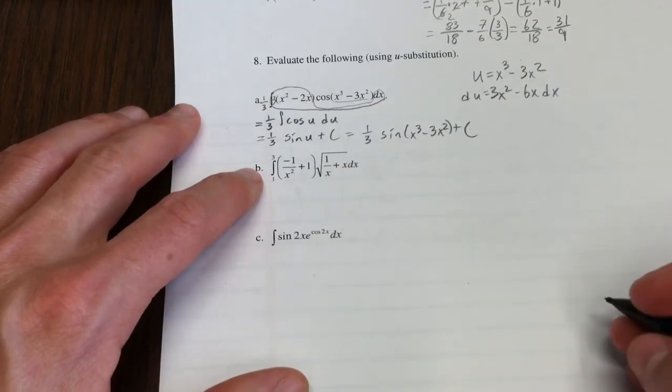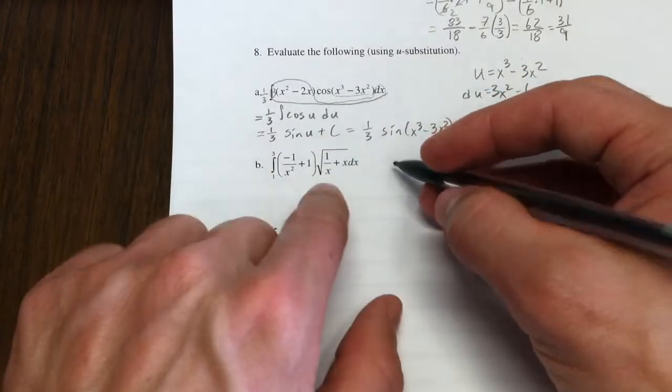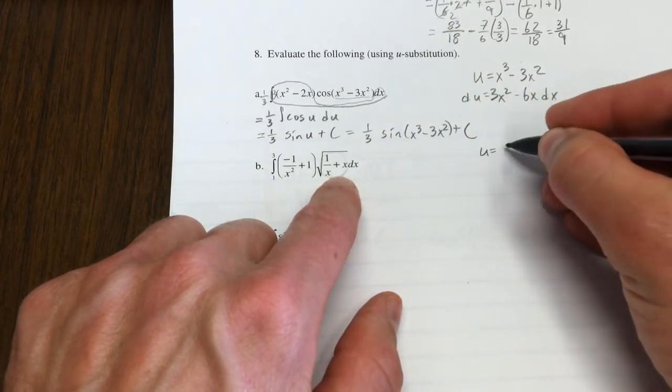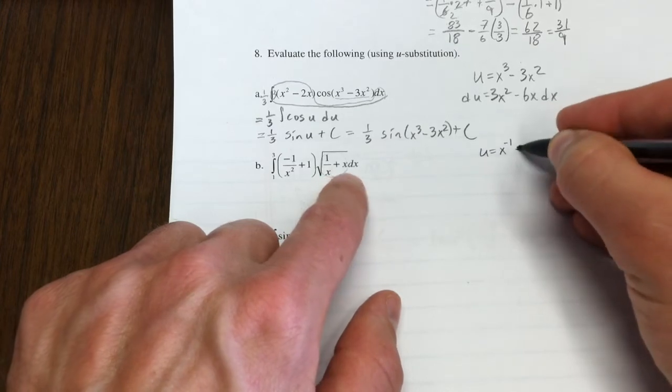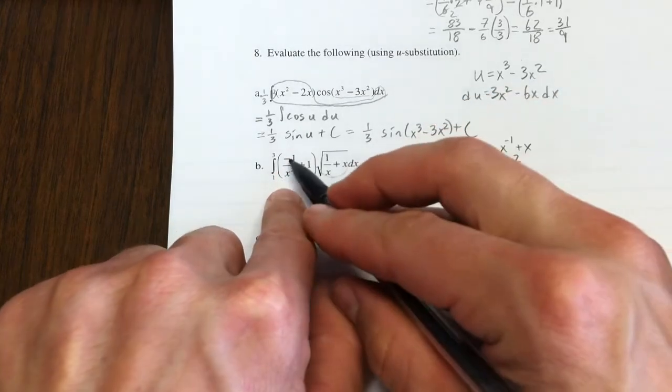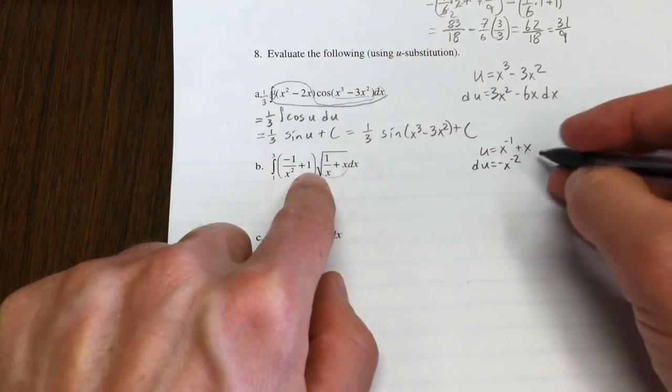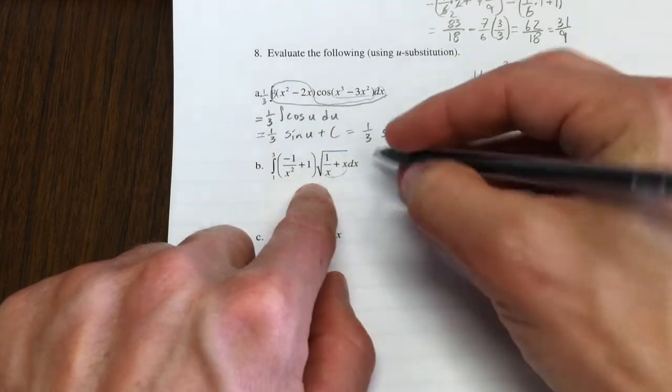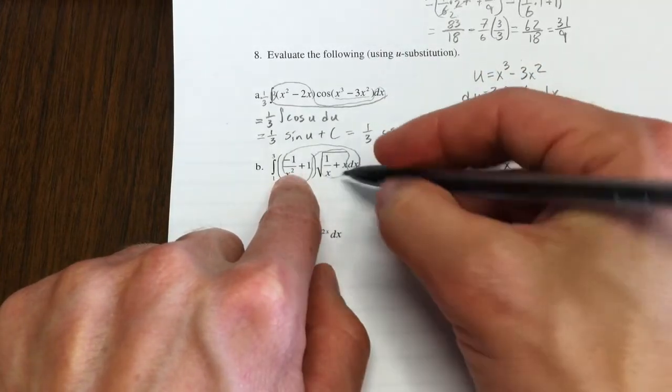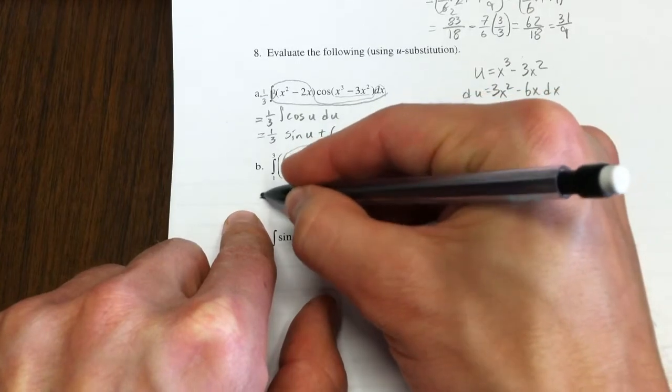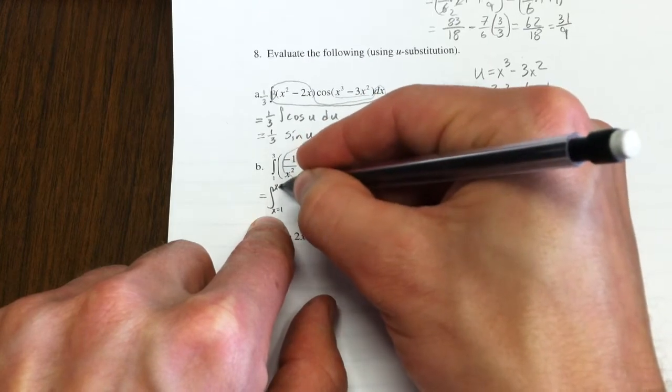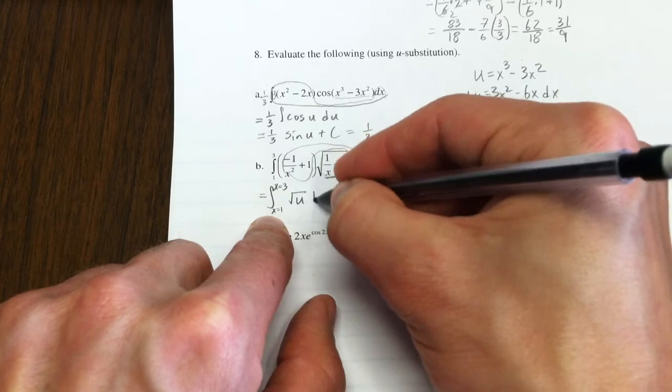Here we have a definite integral that we're going to have to use u-substitution for. If we took the thing under our square root as our u, it looks like it's going to be promising. That's x to the negative 1 plus x. That would make du negative x to the negative 2, negative x to the negative 2 plus 1 dx. So there's my du. There's my u. So I'm going to set that equal to x equals 1 up to x equals 3 of the square root of u du.